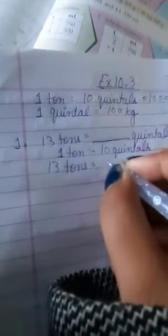In the first question, we are given 13 tons and we have to change it into quintals. From the conversions above, we know that 1 ton equals 10 quintals. To convert 13 tons, the bigger unit, into the smaller unit, we multiply 13 by 10 to get the answer in quintals. That will be equal to 130 quintals.